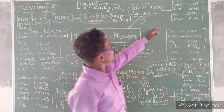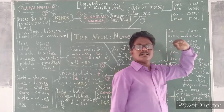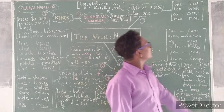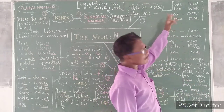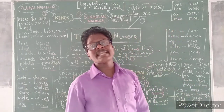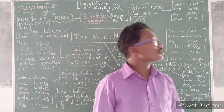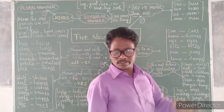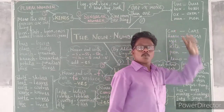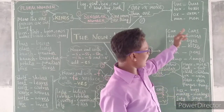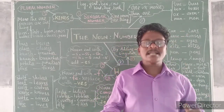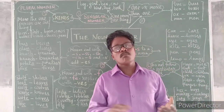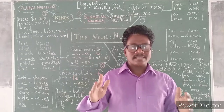Examples: tree — one tree, but trees is more than one tree. Box — one box, boxes — more than one box. Ox — one ox, oxen — more than one. Man — one person, but men — more than one man. So that is the number — one or more than one.